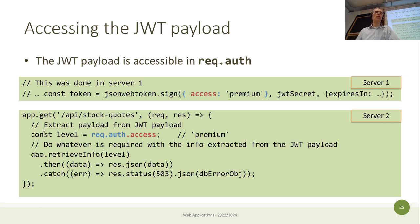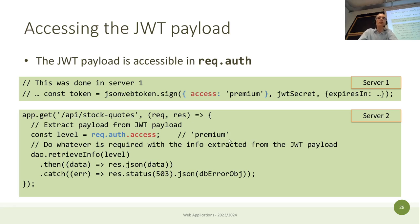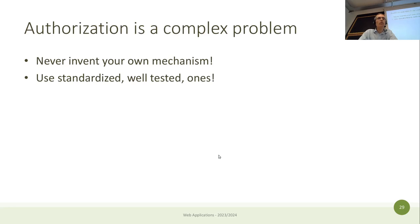Even after the token signature is verified, you can still refuse a request based on the payload contents — for example, returning 401 if the user isn't premium for a certain API. The token verification is a prerequisite, but authorization logic based on the payload content is still your responsibility to implement.